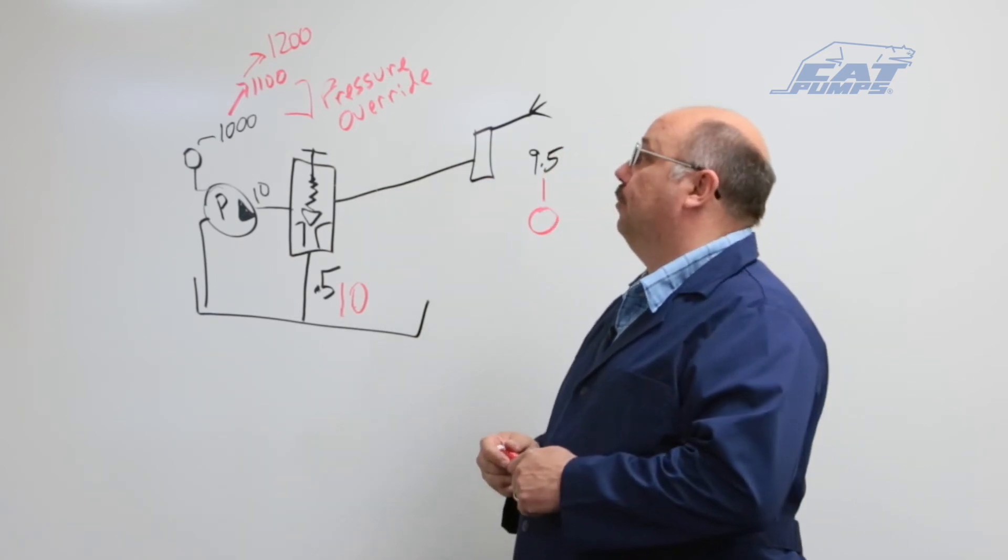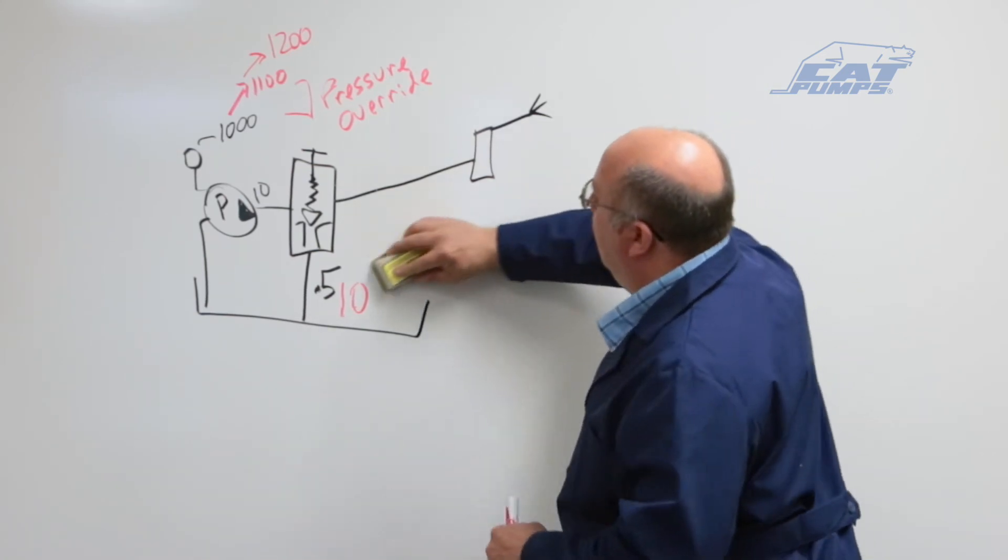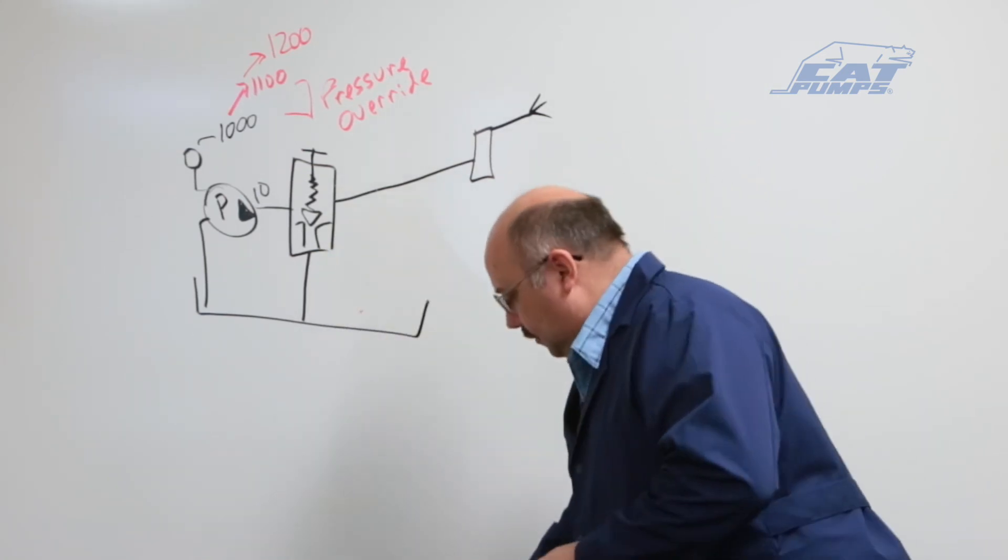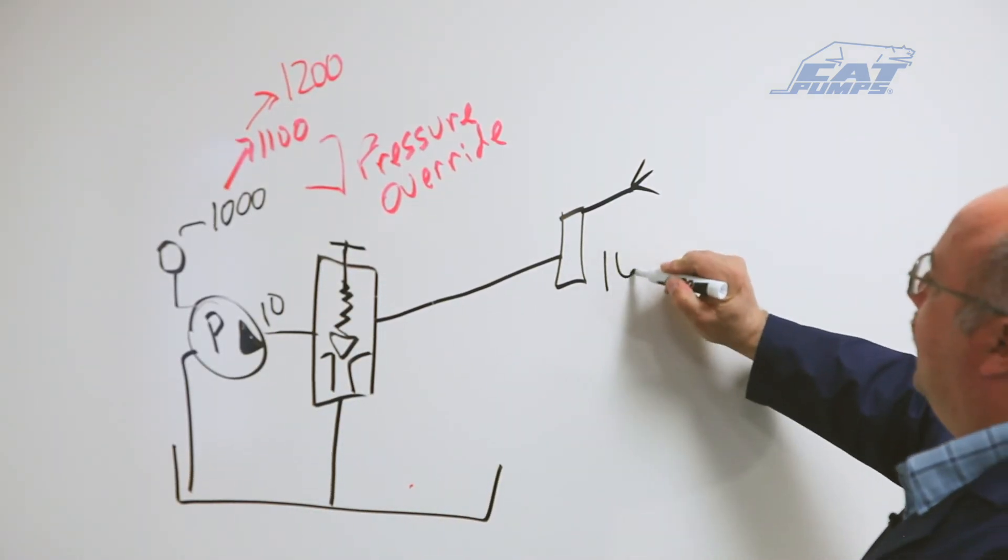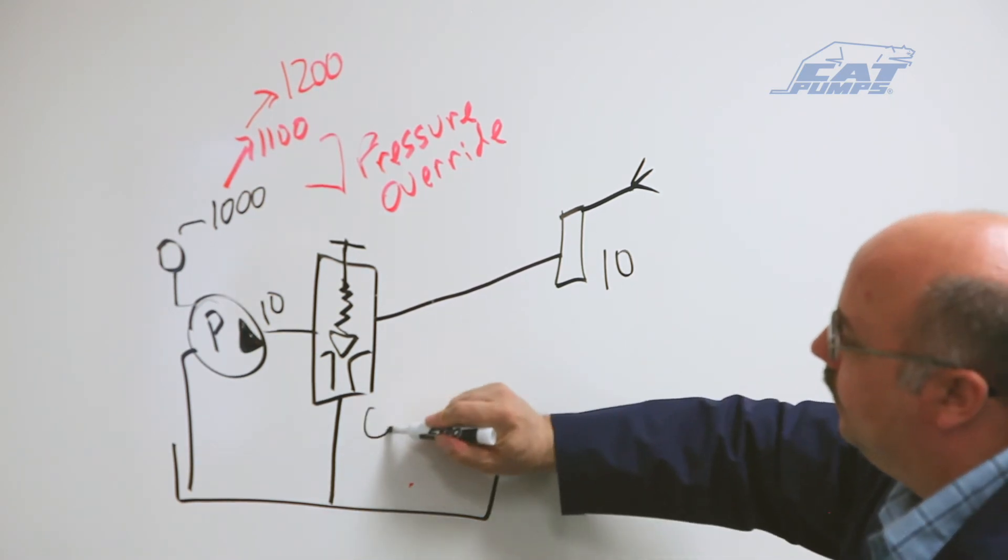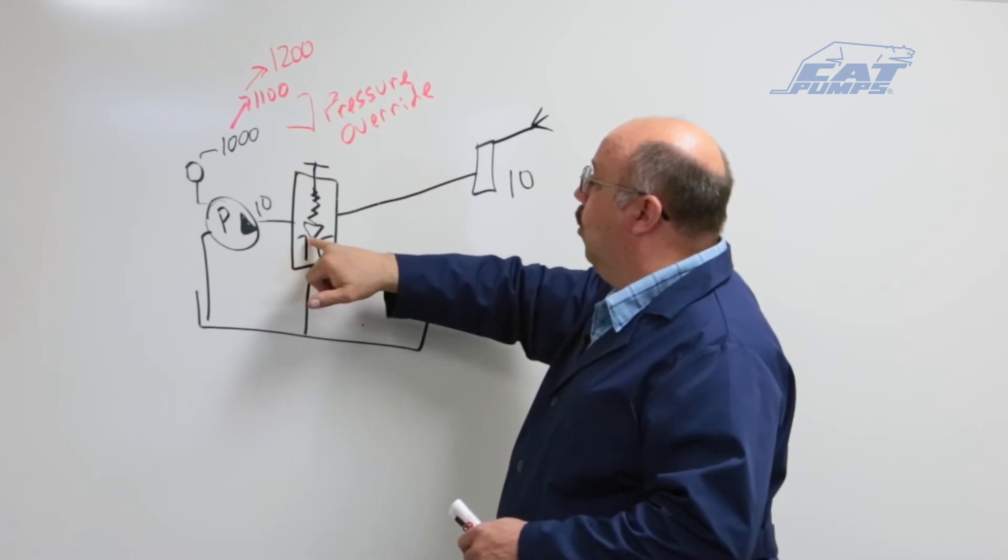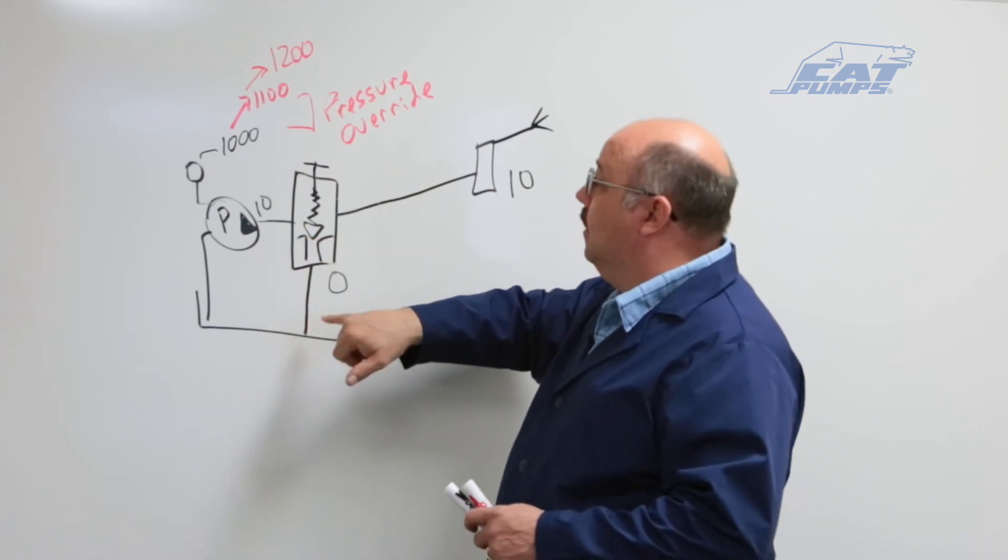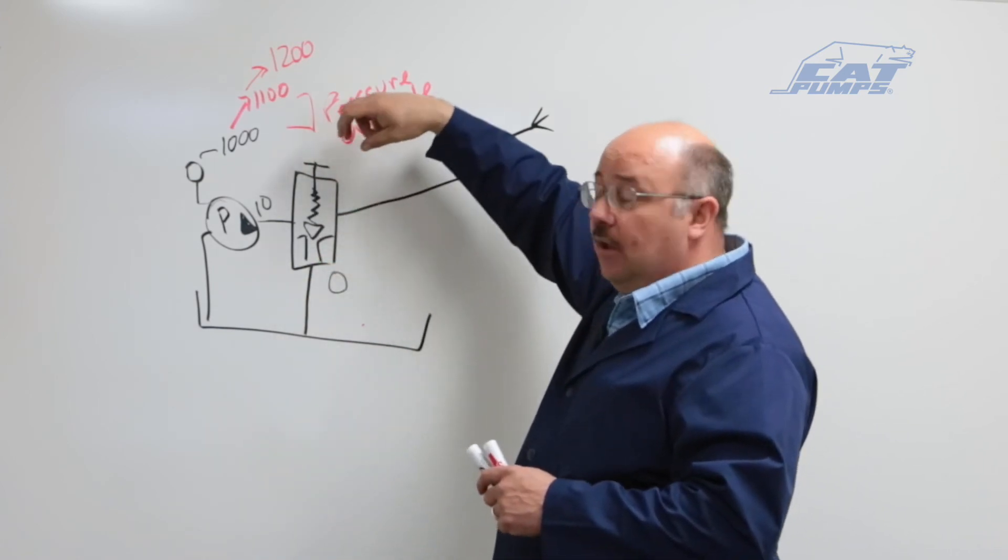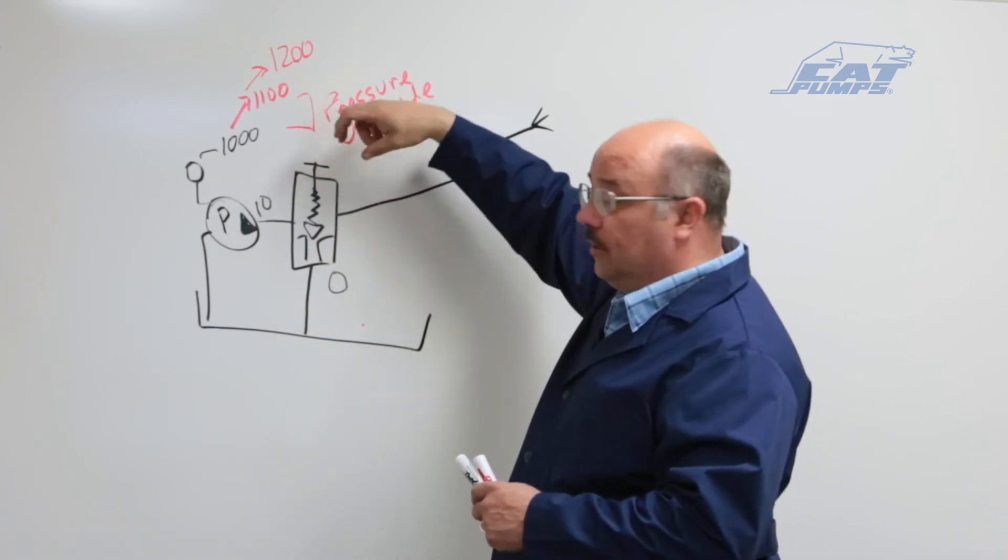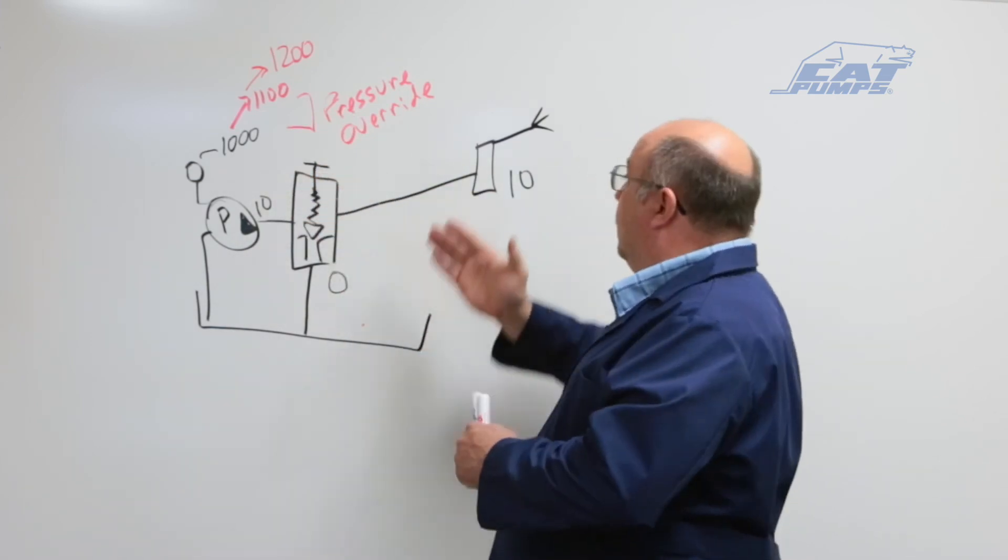Now another thing that can happen with pressure override is if we run too much flow out the nozzles. If I go back and keep this at 10 but I run this at 10 and run this at zero, I have now adjusted this so tight that I have no opening to bypass. And once I have no opening to bypass, I'm allowed to continue to adjust my regulator tighter and tighter against the spring, which doesn't do anything while the gun is open.